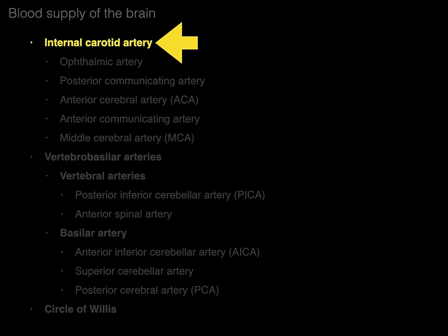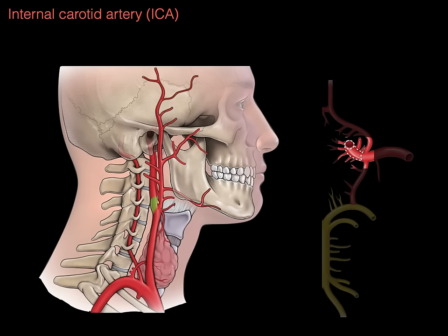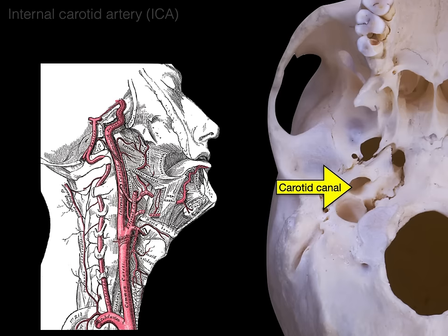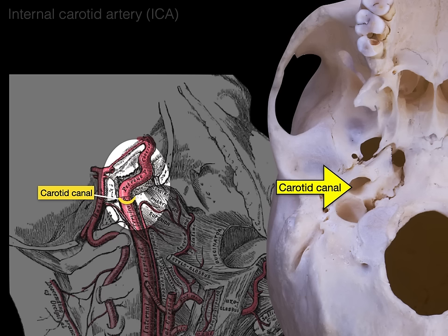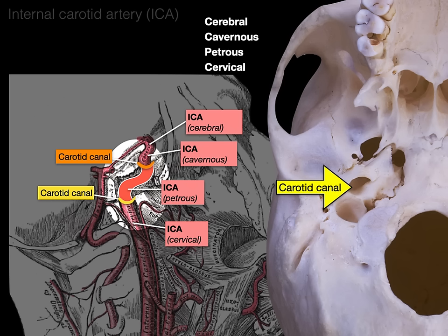Let's start with the internal carotid artery and its branches. The common carotid artery bifurcates into external and internal carotid arteries. The internal carotid artery ascends and goes through the base of the skull via the carotid canal. There are basically four parts: the cervical part in the neck, the petrous part through the carotid canal, the cavernous part in the cavernous sinus, and then the cerebral part supplying the brain.